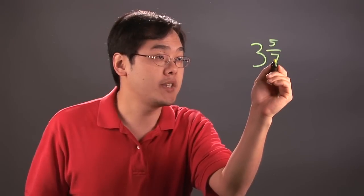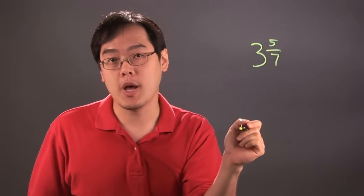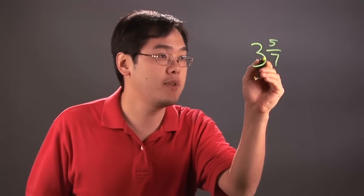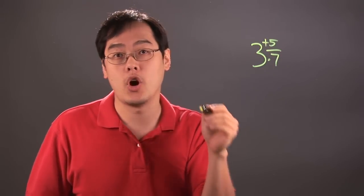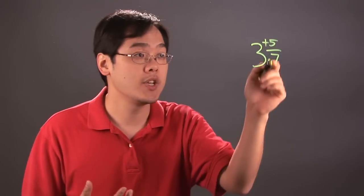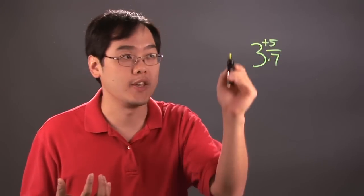You always take the denominator and multiply by the whole number that's next to it, so 7 multiplied by the 3. And after that you want to add to the numerator. You always got to do this. Now with order of operations the multiplication always comes first and the addition is last.